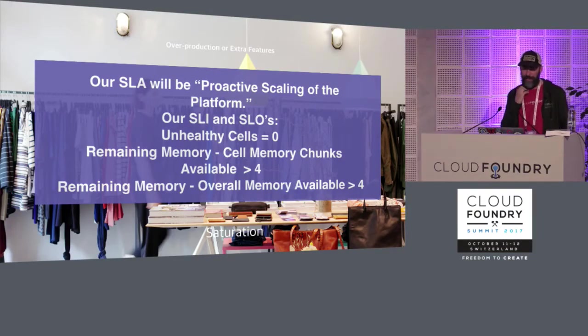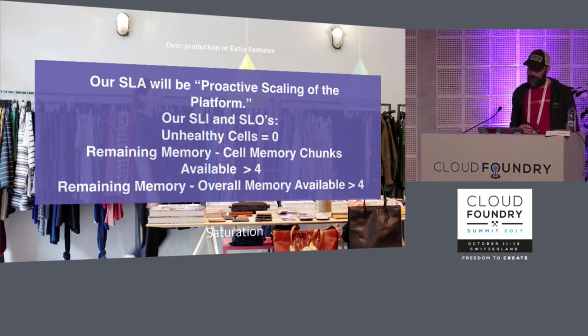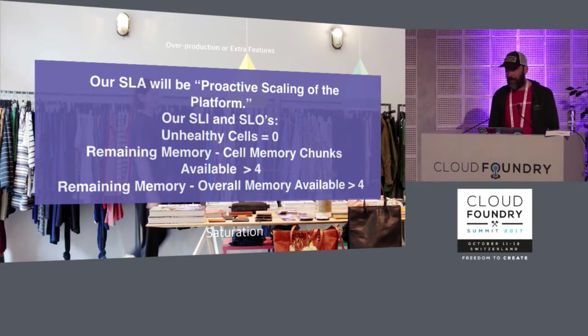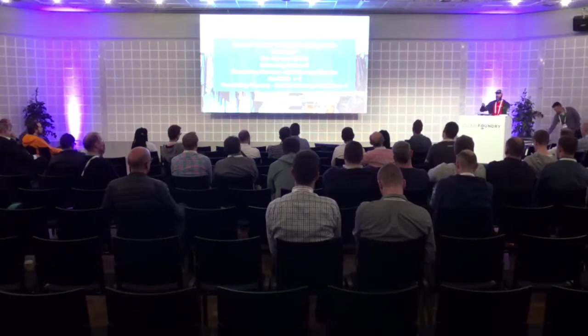Saturation of our system — we want to proactively scale our platform. If the number of unhealthy cells is zero, that's pretty good. A company that cost themselves many millions of dollars because they didn't scale correctly was Target on Black Friday — the day after Thanksgiving in the US, a very big shopping day. Their system went down and it cost them millions of dollars.